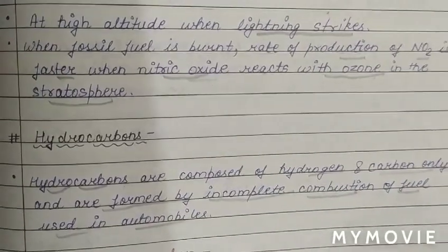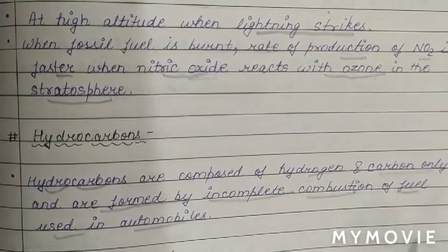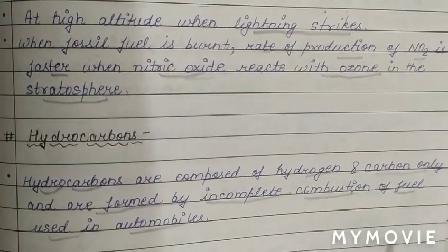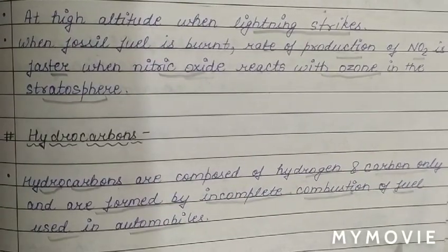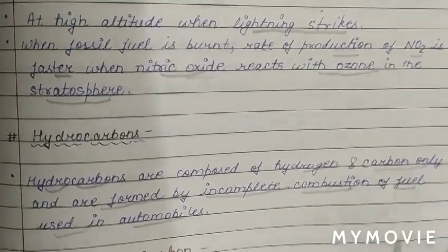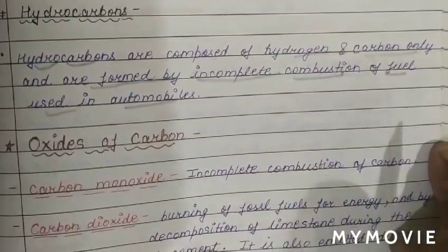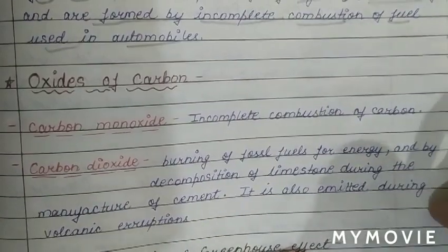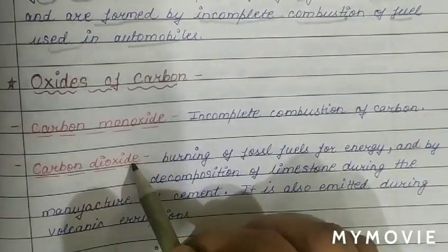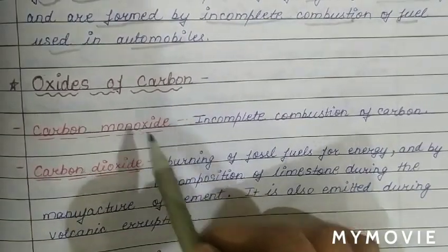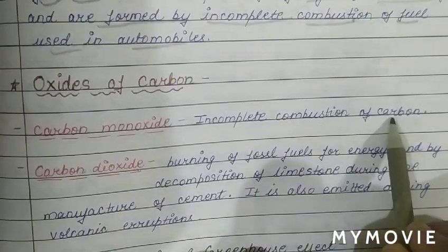The next gaseous air pollutant is oxides of carbon. We will discuss two oxides of carbon: carbon monoxide and carbon dioxide. Carbon monoxide is formed by incomplete combustion of carbon.